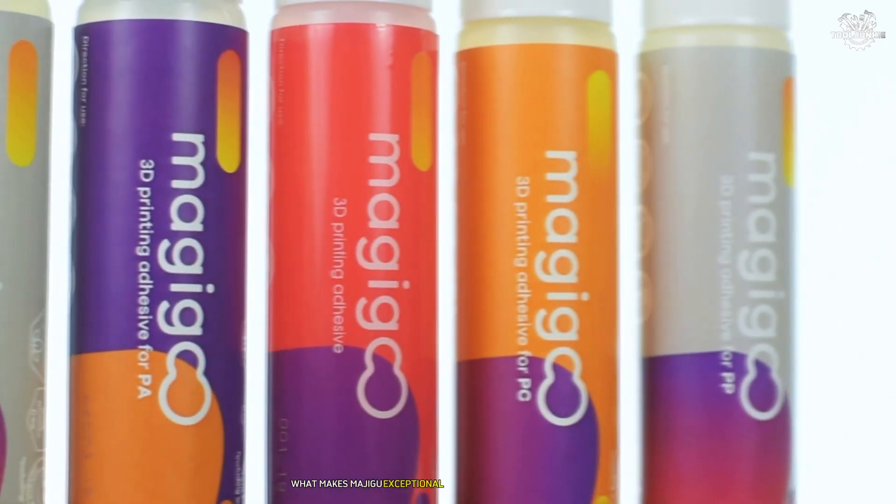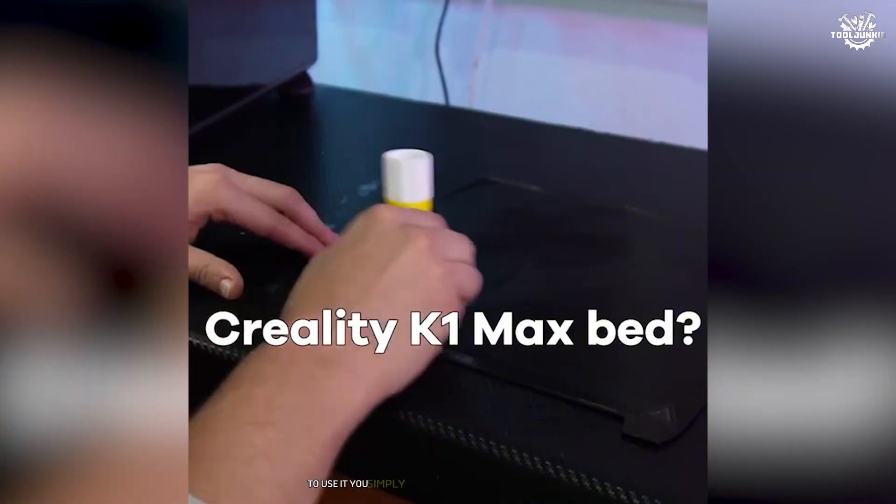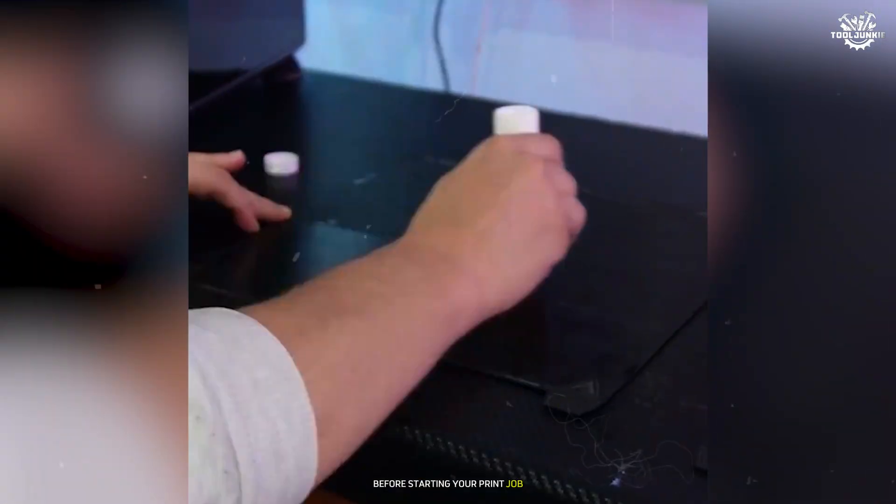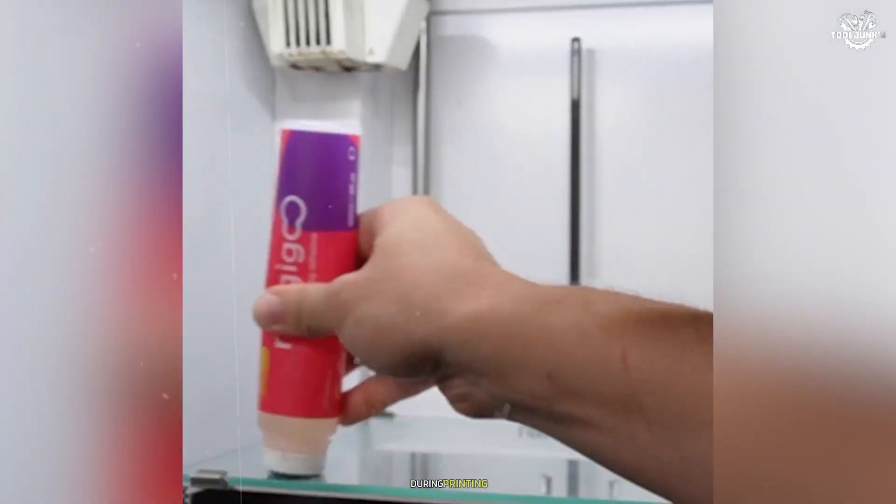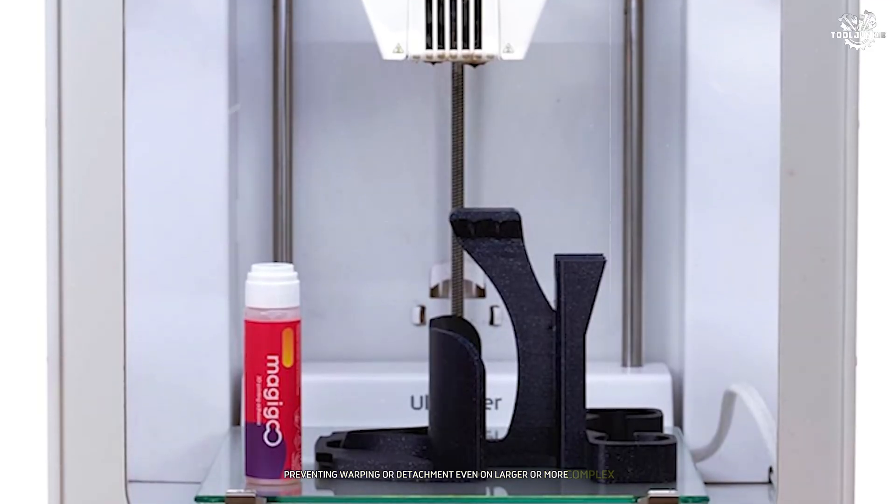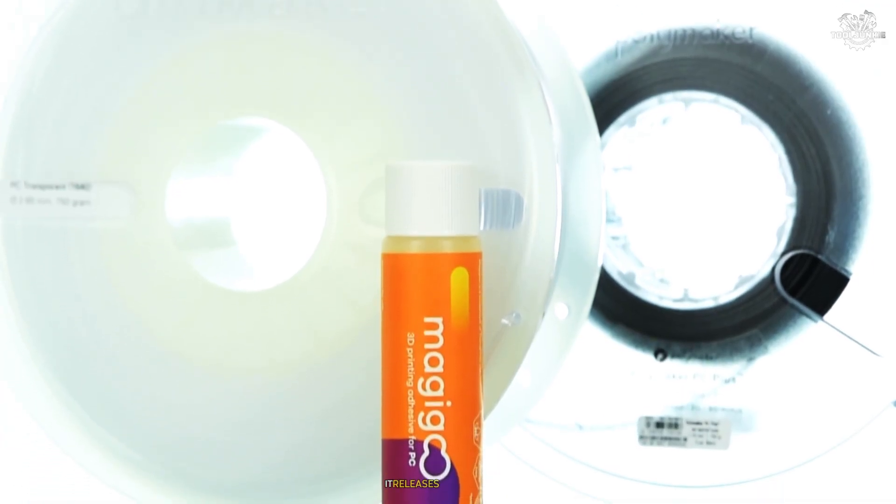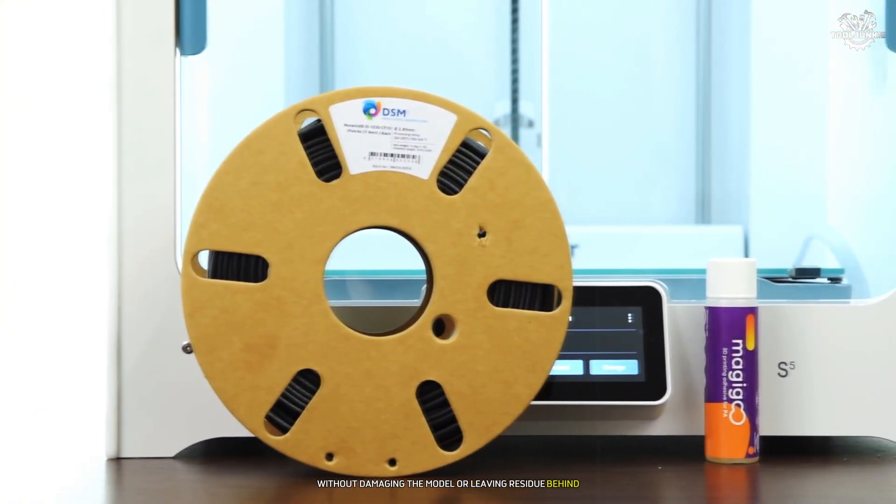Its unique water-based formula ensures prints stick securely while the bed is hot but release effortlessly once cooled. What makes MAJIGOO exceptional is its simplicity and effectiveness. To use it, you simply apply a thin layer to your build plate before starting your print job. The adhesive creates a strong bond between the filament and the plate during printing, preventing warping or detachment even on larger or more complex models. Once the print cools down, it releases automatically without damaging the model or leaving residue behind, a feature that saves time and effort during cleanup.